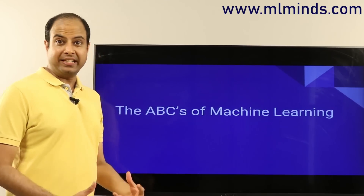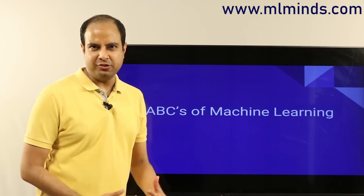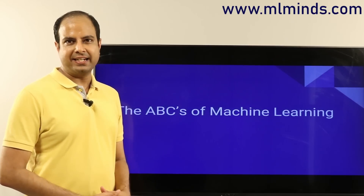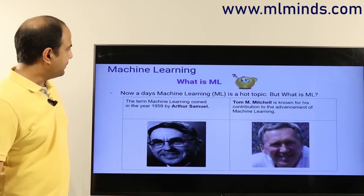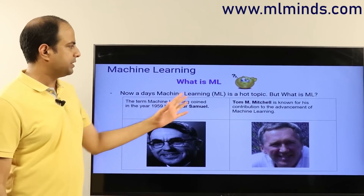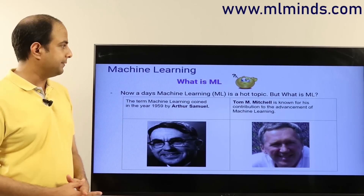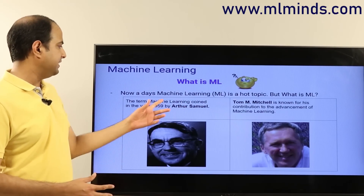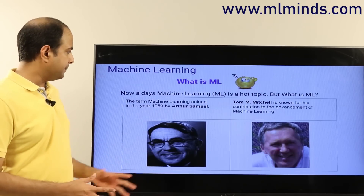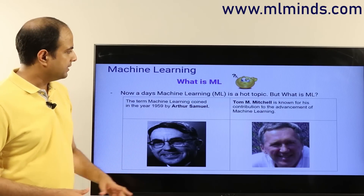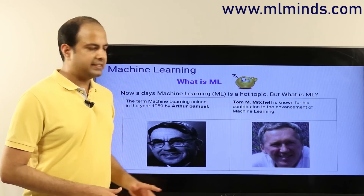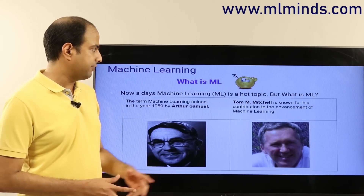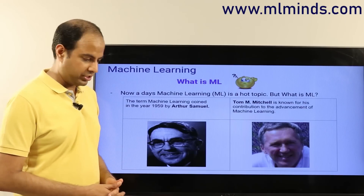In this video I'll talk about the ABCs of machine learning, so if you're a newbie to machine learning and want to know what it is, let's try to understand through this video. Nowadays machine learning is a hot topic. The history is as follows: in 1959 the term 'machine learning' was coined by Arthur Samuel. This person is Tom Mitchell, who is very popular in machine learning circles and known for his contributions to the advancement of this field.